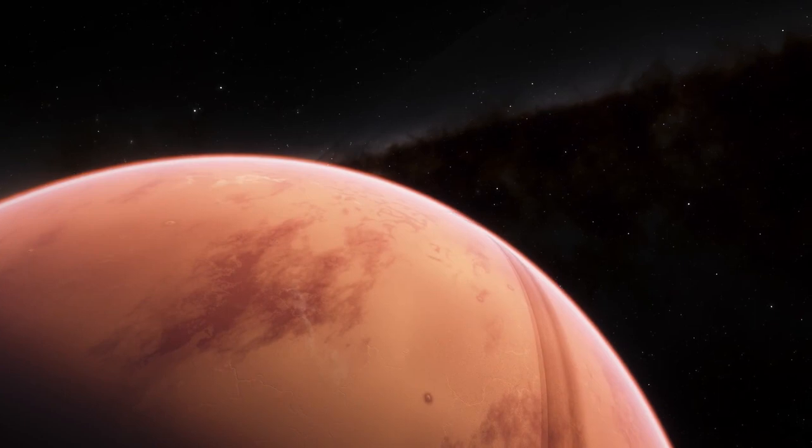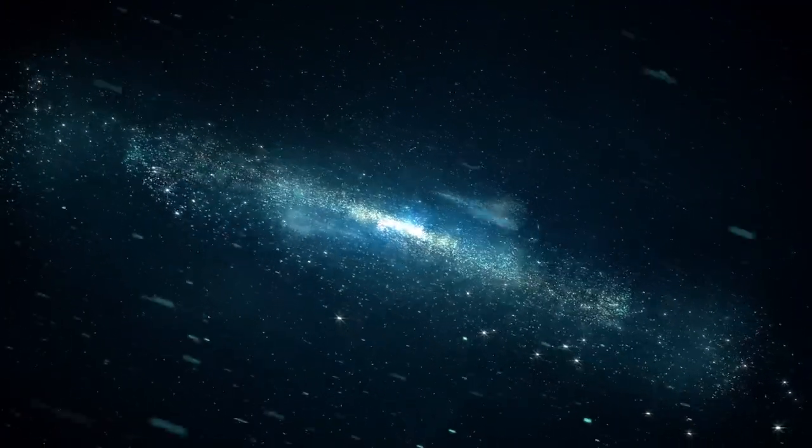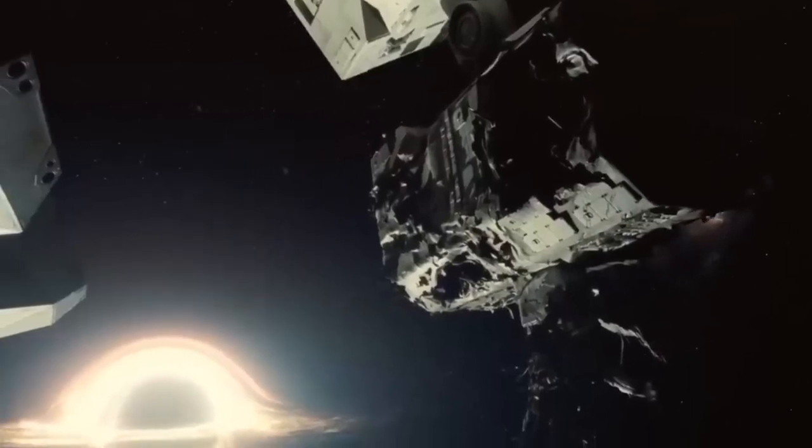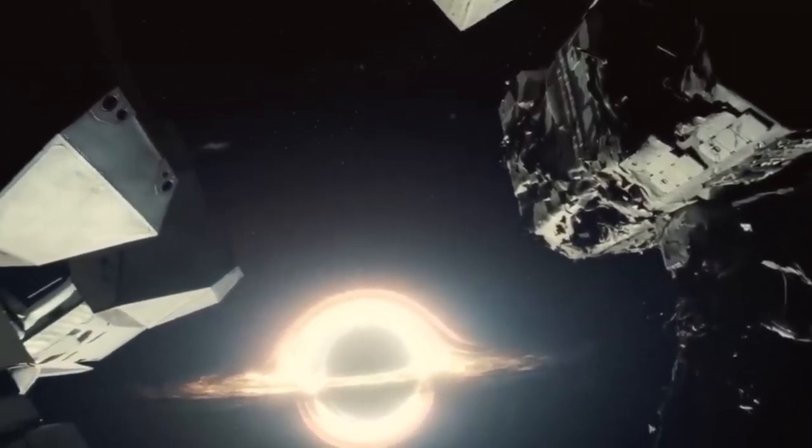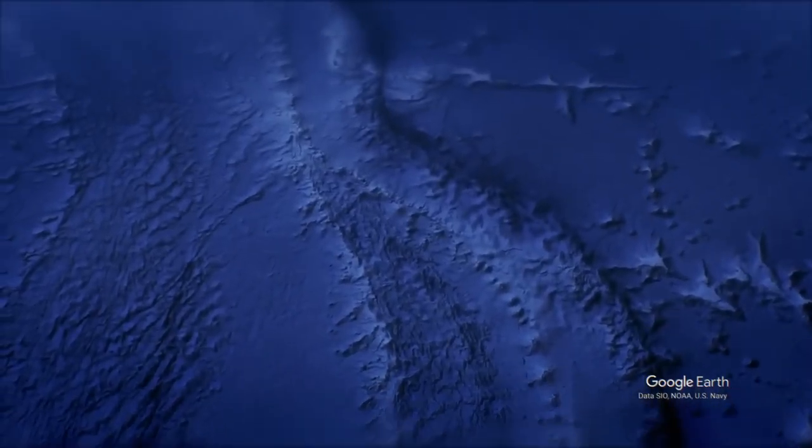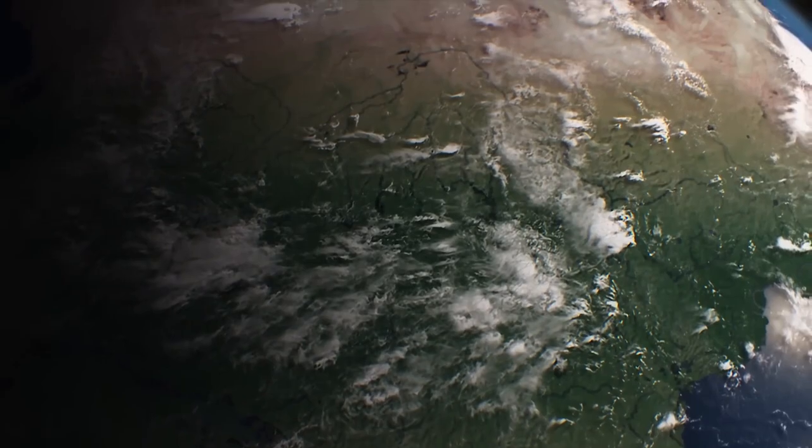How are comets created? Planetesimals are the tiny, newborn planets that emerge from the disk of gas and dust that surrounds planetary systems. These objects range in size from asteroids, which are at one extreme, to comets, which are at the other.